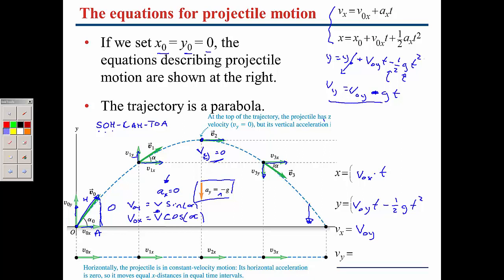We also write vy equals v₀y minus g·t. For v₀x and v₀y, we've already solved for those using the cosine and sine of the launch angle — so we can plug those into the v₀ terms.